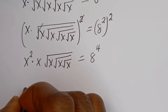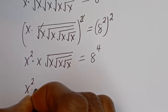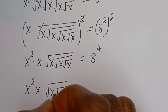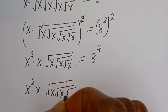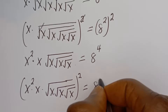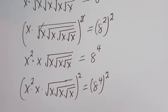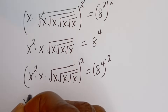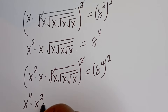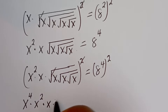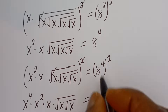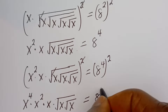Let's square both sides of this equation again. We have S squared, S squared, square root of S, square root of S, square root of S — all squared — is equal to H to the power of 4 squared. Then this gives S to the power of 4, multiplied by S squared, and we cancel the outer radical, multiplied by S, multiplied by square root of S, then square root of S is equal to H to the power of 8.